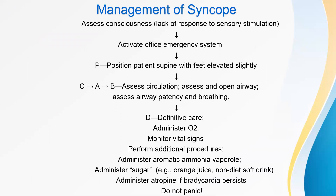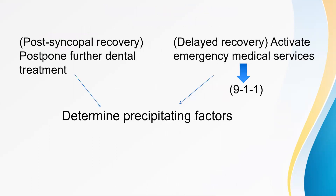Management of syncope: Assess consciousness, activate the office emergency team, position patient supine with feet elevated slightly, assess circulation, assess and open the airway, assess airway patency and breathing. For definitive care: administer oxygen, monitor vital signs, perform additional procedures such as administering aromatic ammonia vaporole, administer sugar such as orange juice or non-diet soft drinks, administer atropine if bradycardia persists, and do not panic. In post-syncope recovery, postpone further dental treatment and determine the precipitating factors. In delayed recovery, activate emergency medical services and call 911.